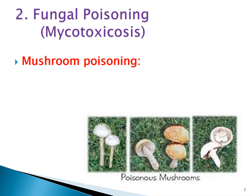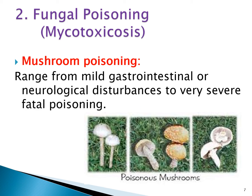Another example of fungal poisoning is mushroom poisoning. Some mushrooms are poisonous to humans, so if there is accidental ingestion, manifestations range from mild gastrointestinal or neurological disturbances to very severe fatal poisoning. So we have three examples of fungal poisoning: ergotism, aflatoxin poisoning, and mushroom poisoning.